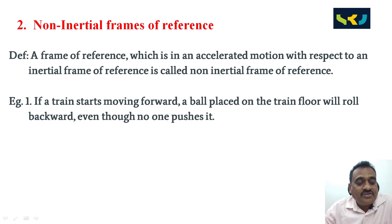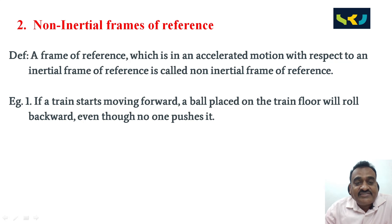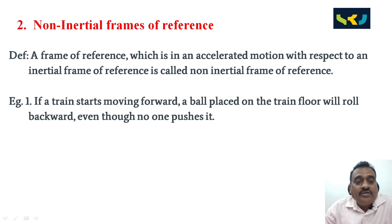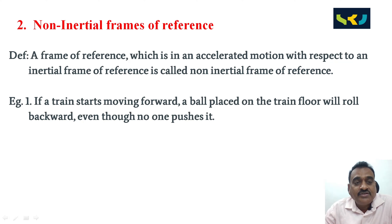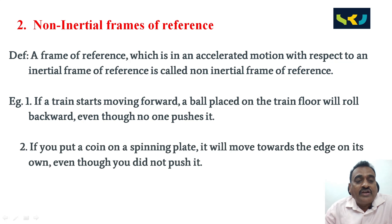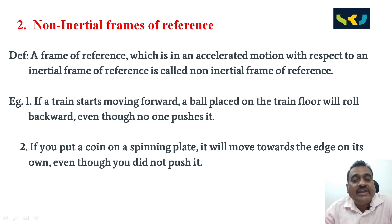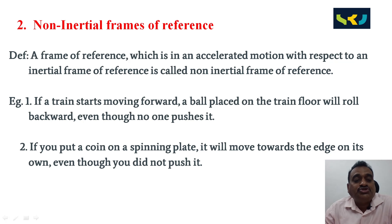Examples of non-inertial frames: if a train starts moving forward, a ball placed on the train floor will roll backward even though no one pushes it. Second, if you put a coin on a spinning plate, it will move towards the edge on its own even though you did not push it.